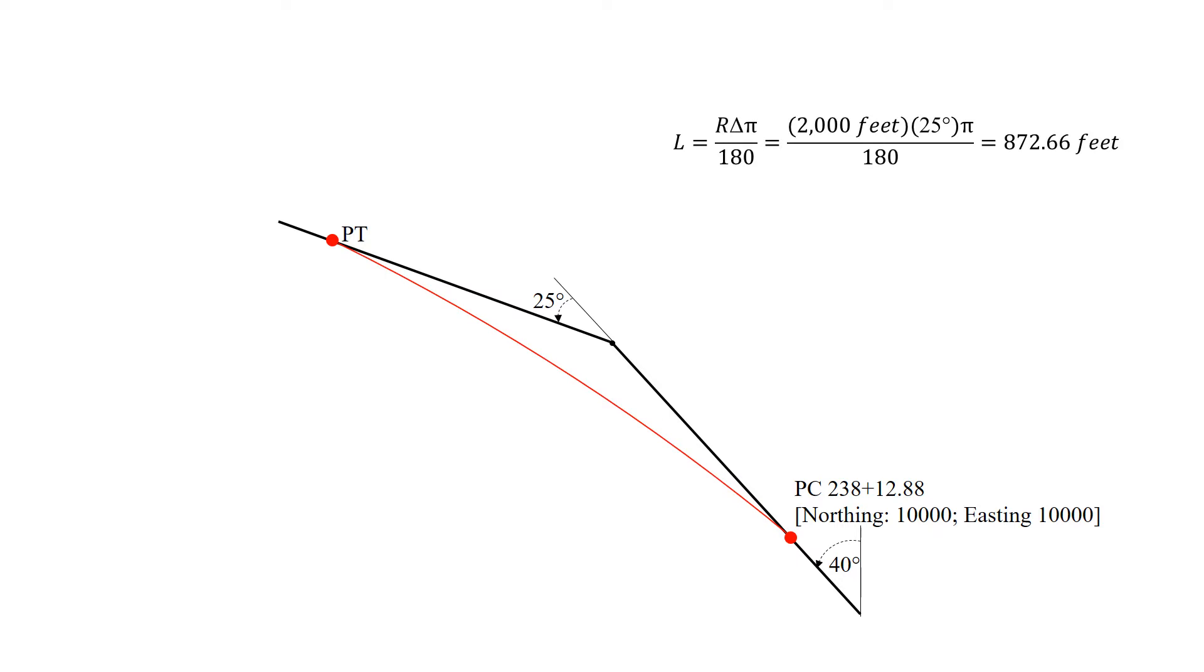The length of this curve is the radius times the delta times pi divided by 180. So 2,000 times 25 degrees times pi over 180 gives us a length of 872.66 feet.